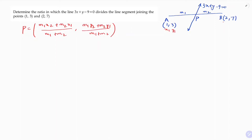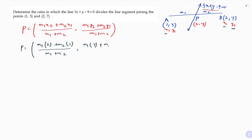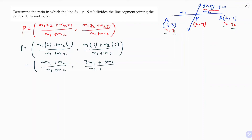Here, x1, y1 is (1, 3) and x2, y2 is (2, 7). I will find the point P and substitute it into the equation. Substituting the values: x equals 2m1 plus m2 by m1 plus m2, and y equals 7m1 plus 3m2 by m1 plus m2.